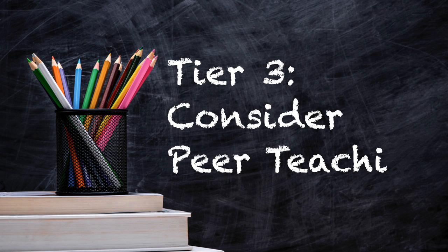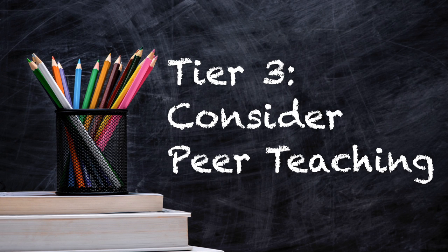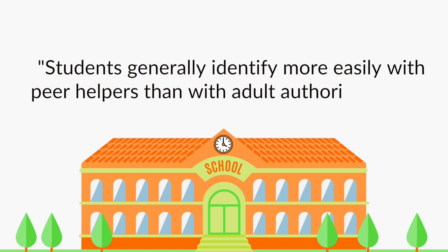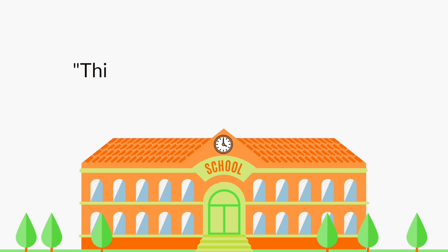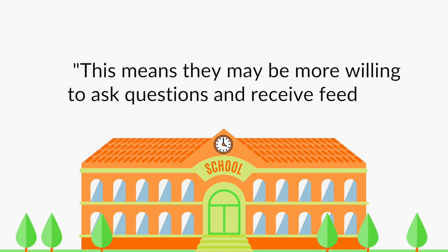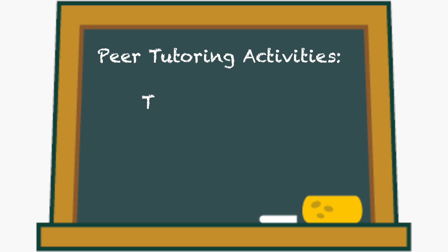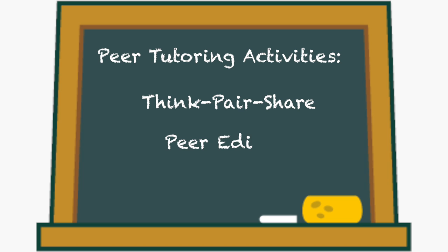Tier three: consider occasional peer teaching. Take this quote from an authoritative study as an example: students generally identify more easily with peer helpers than with adult authority figures, meaning they may be more willing to ask questions and seek feedback. Peer tutoring is a nuanced pedagogy in its own right, but easy-to-run activities include think-pair-share exercises, peer editing exercises, and jigsaw exercises.